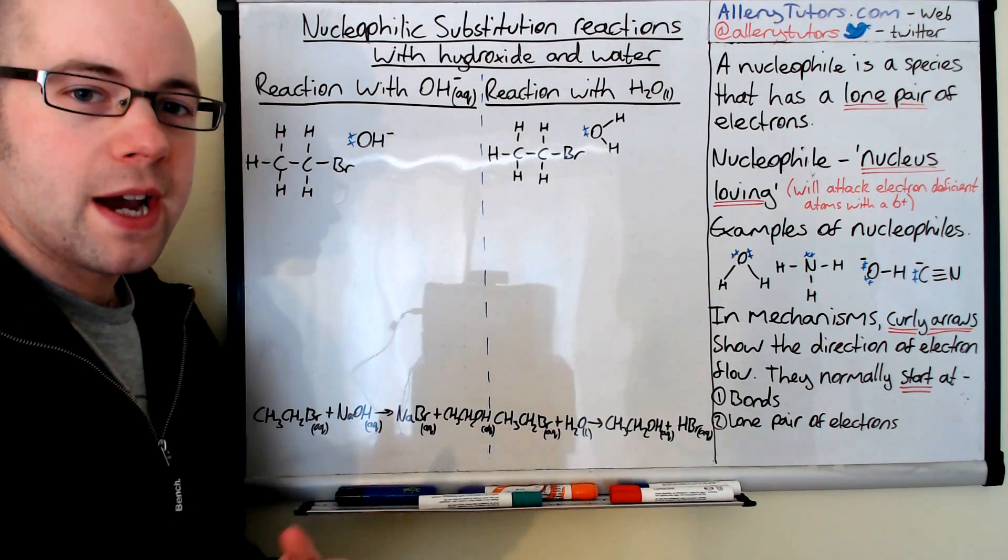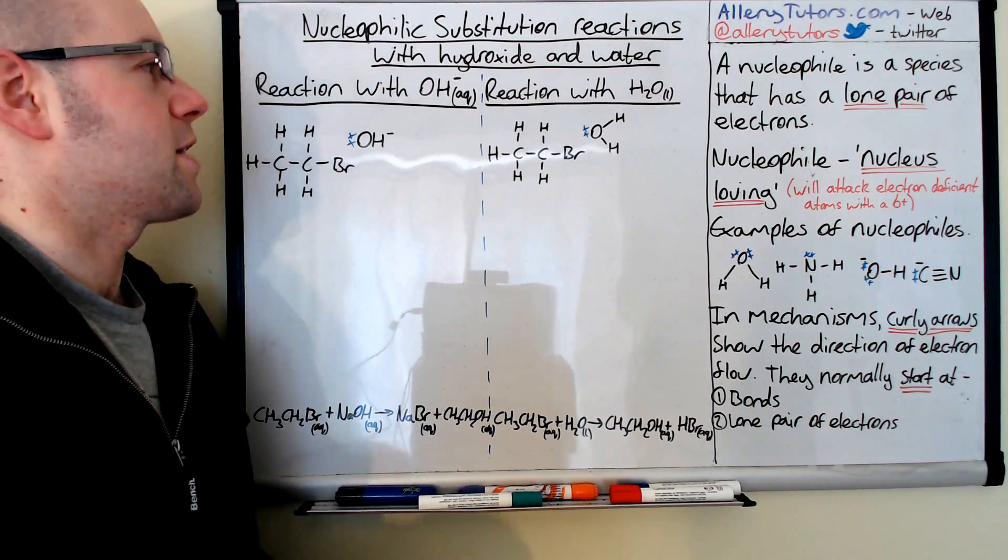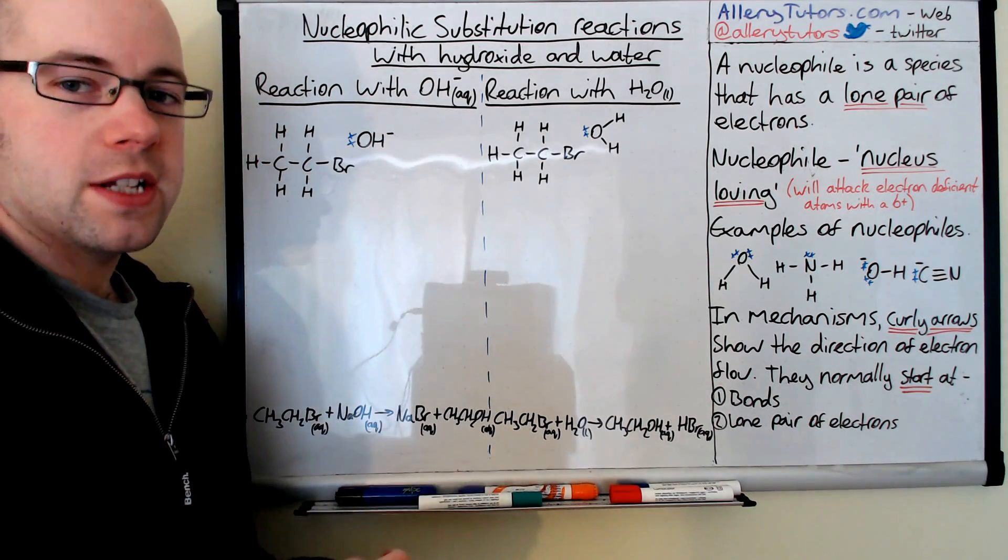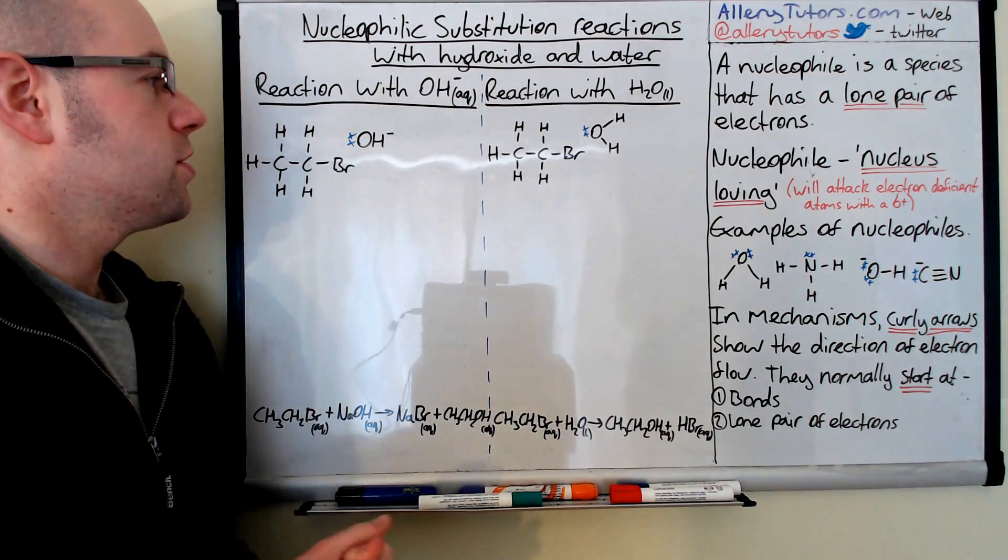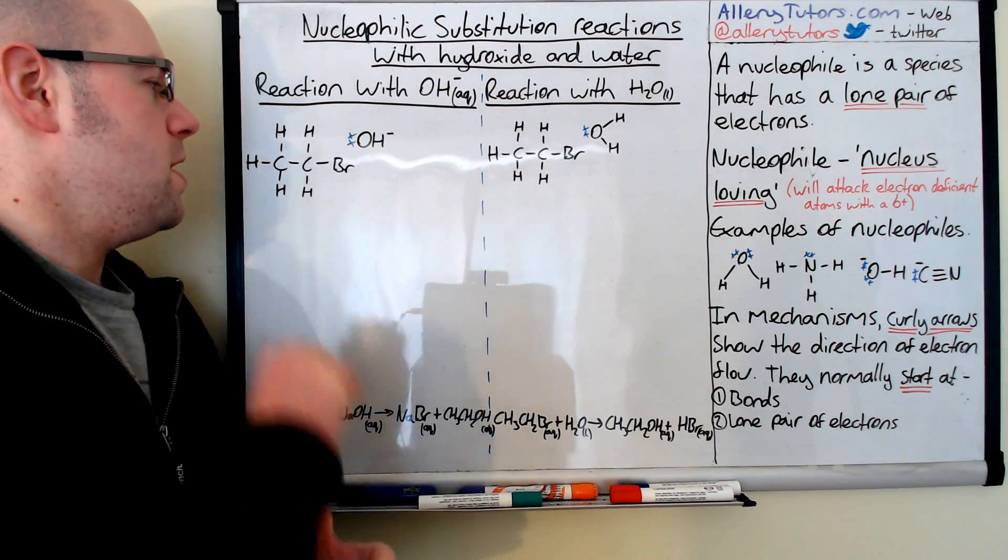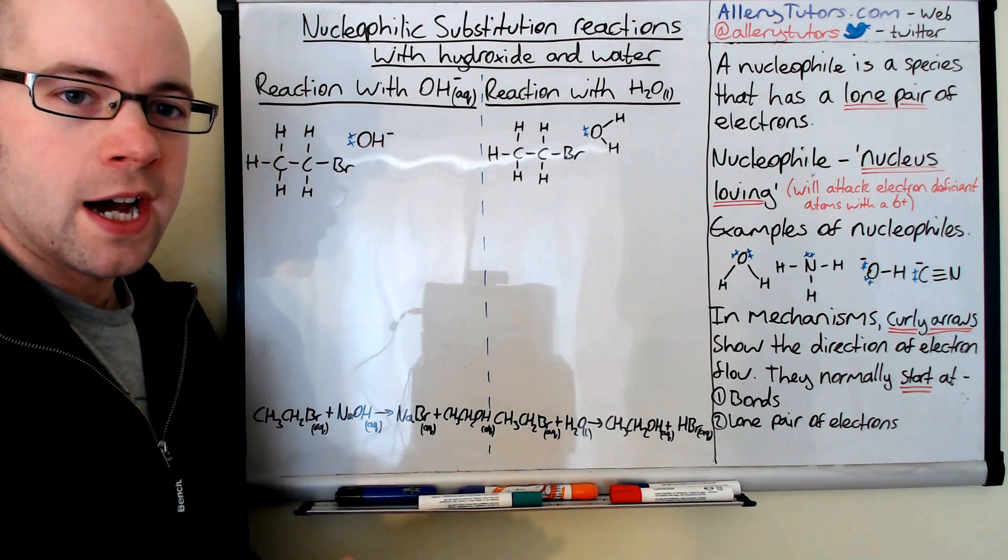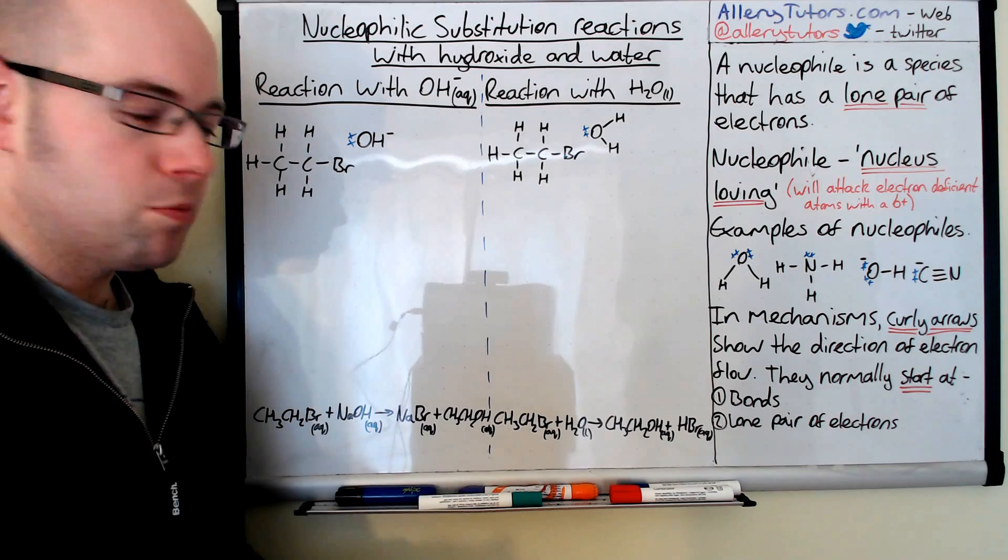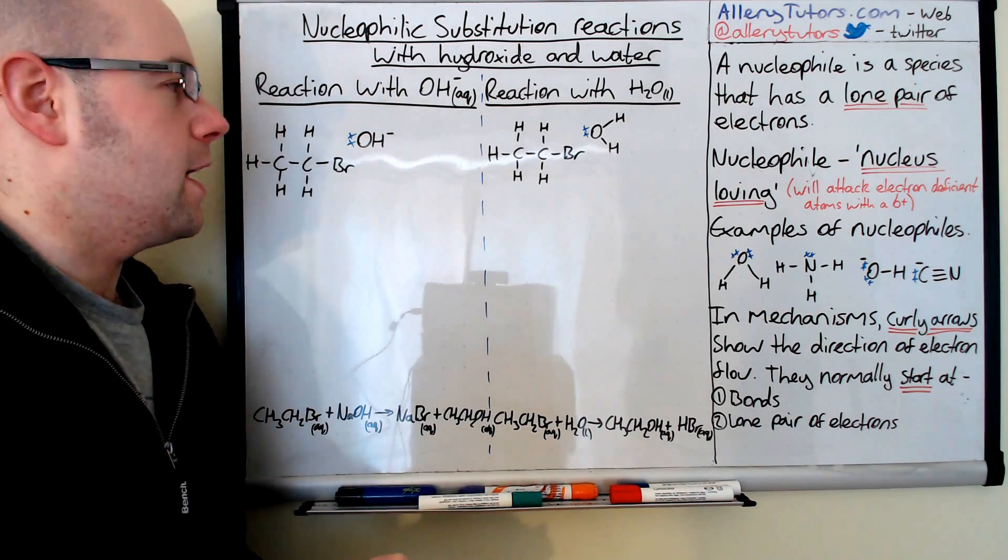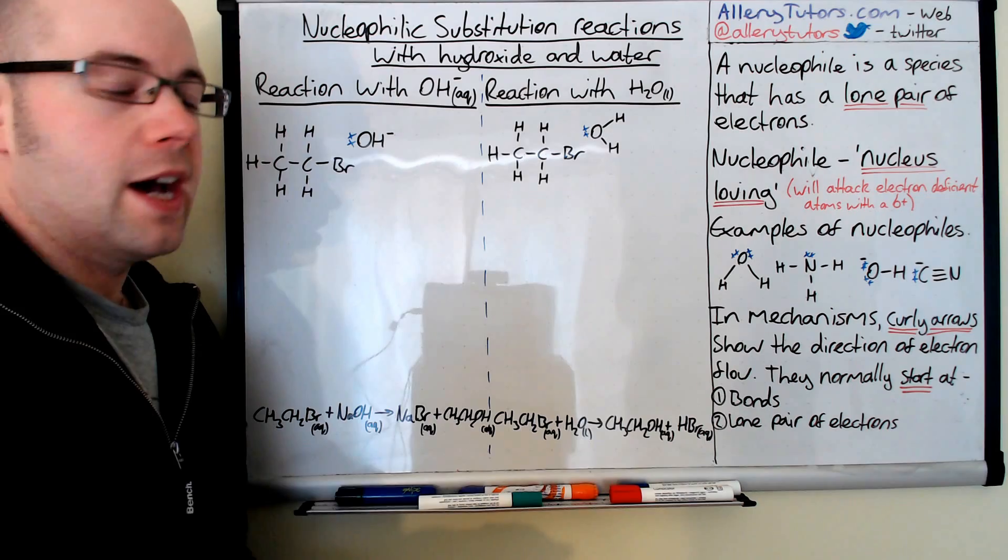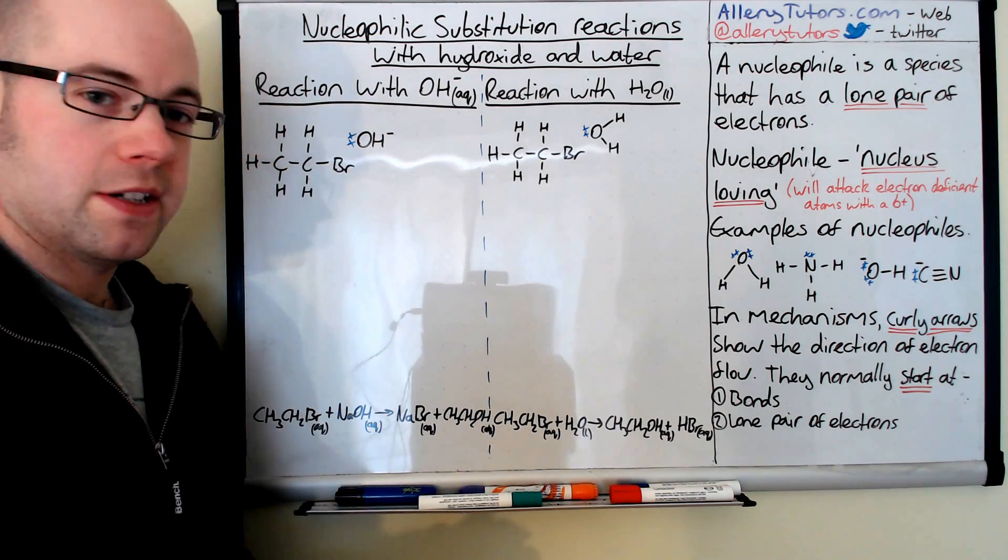We're going to do two reactions here. We're going to do a nucleophilic substitution reaction with sodium hydroxide and then we're going to do it with water. So we're going to start with the hydroxide one first. I've drawn down bromoethane which is on the board there, and I've drawn down a hydroxide ion. Hydroxide ions normally come from sodium hydroxide, which is a very alkaline solution, and it will react with your haloalkane. So let's get started.